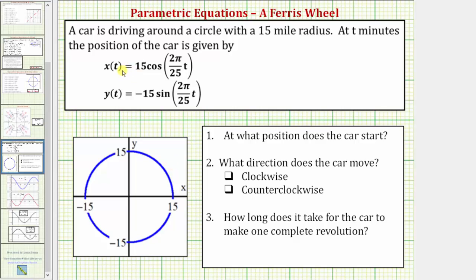we need to find x of zero, which will give us the x-coordinate, and y of zero, which will give us the y-coordinate. So x of zero is equal to 15 times cosine of, well, if t is zero, this product would be zero, so we'd have cosine zero.